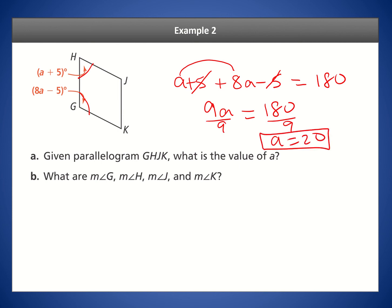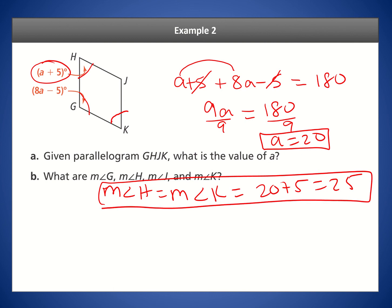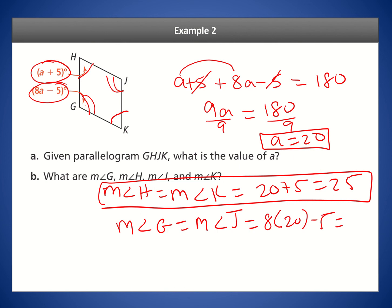Now let's find angles G, H, J, and K. The measure of angle H equals 20 plus 5, which is 25. Since H and K are opposite angles, the measure of angle K is also 25. Similarly, angle G equals 8 times 20 minus 5: 160 minus 5 is 155. Since G and J are opposite angles, the measure of angle J is also 155. Notice that 25 and 155 add up to 180, confirming they are consecutive interior angles.